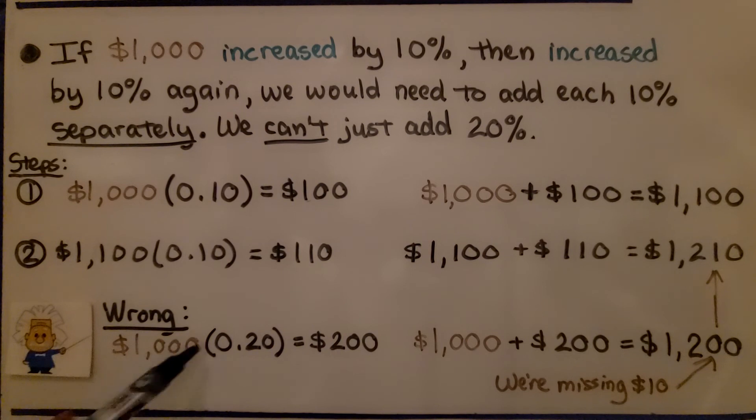If we just try doing it all at once by multiplying by 20%, 20% of $1,000 is $200. When we add it to the $1,000, we're only going to have $1,200. We're missing $10. We have to do each increase or decrease separately.